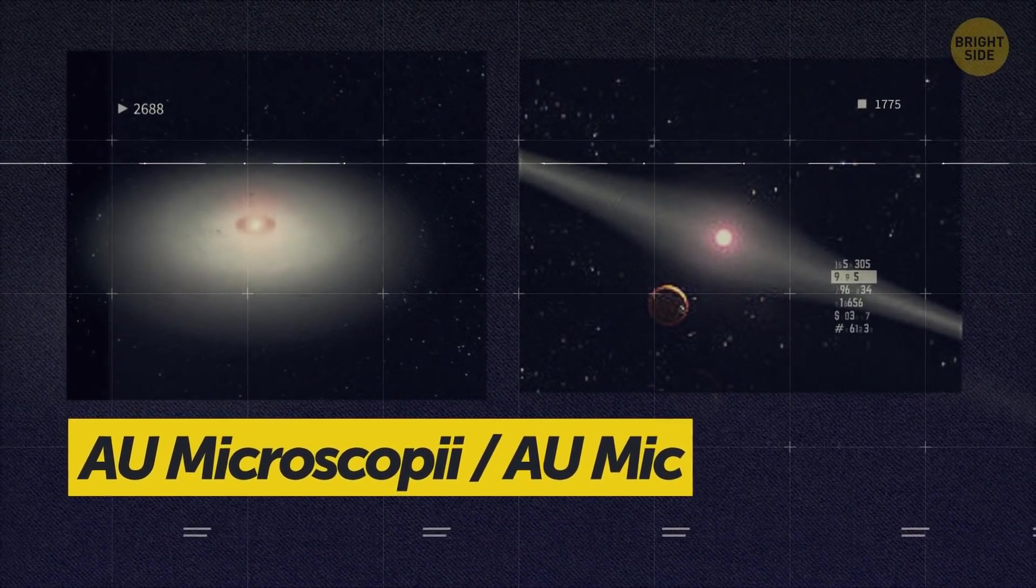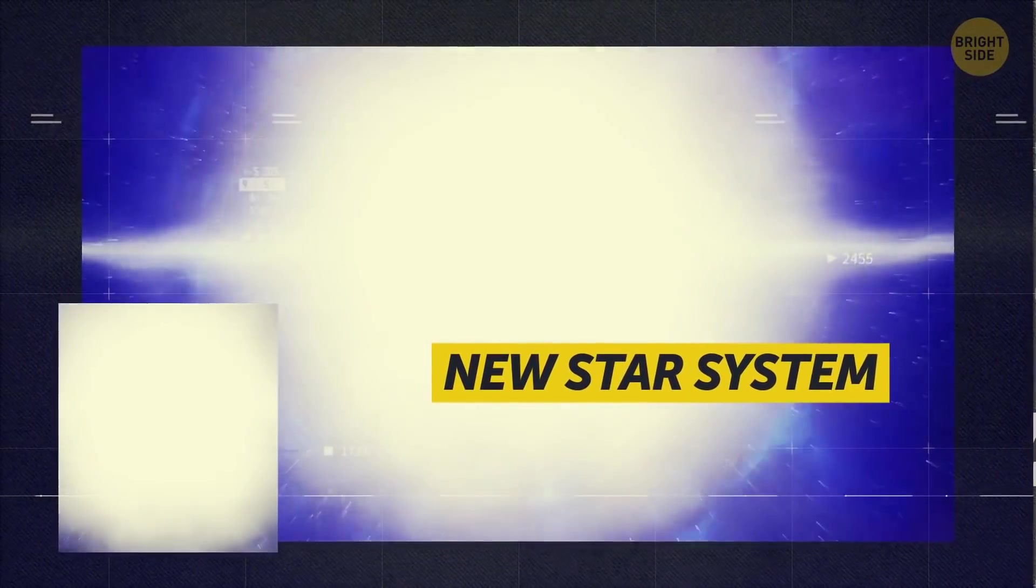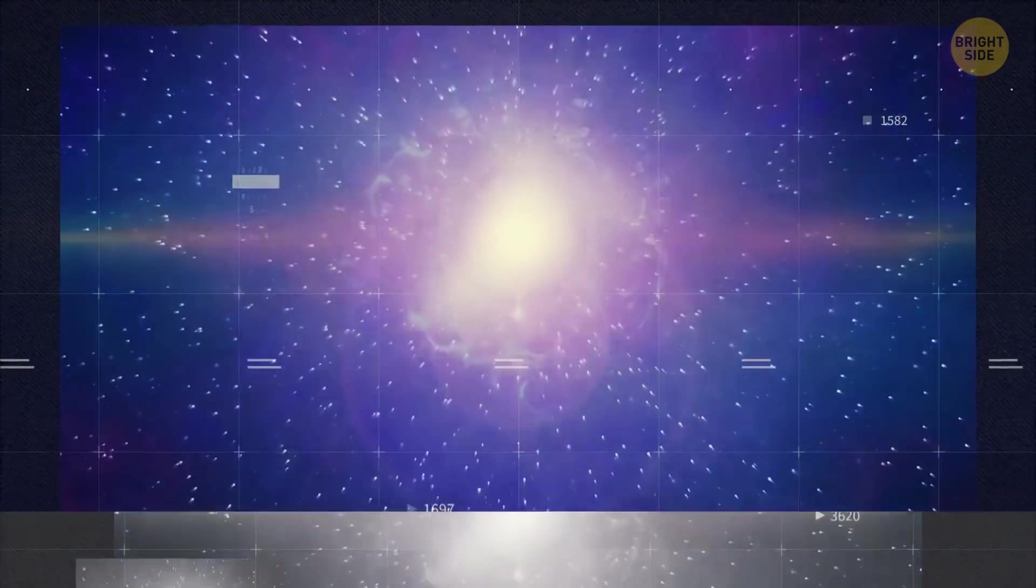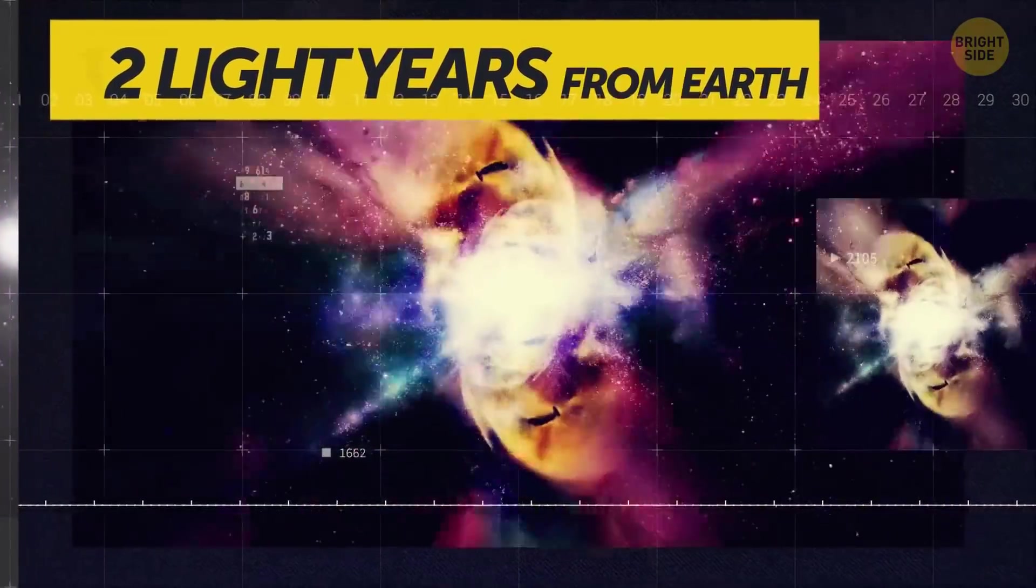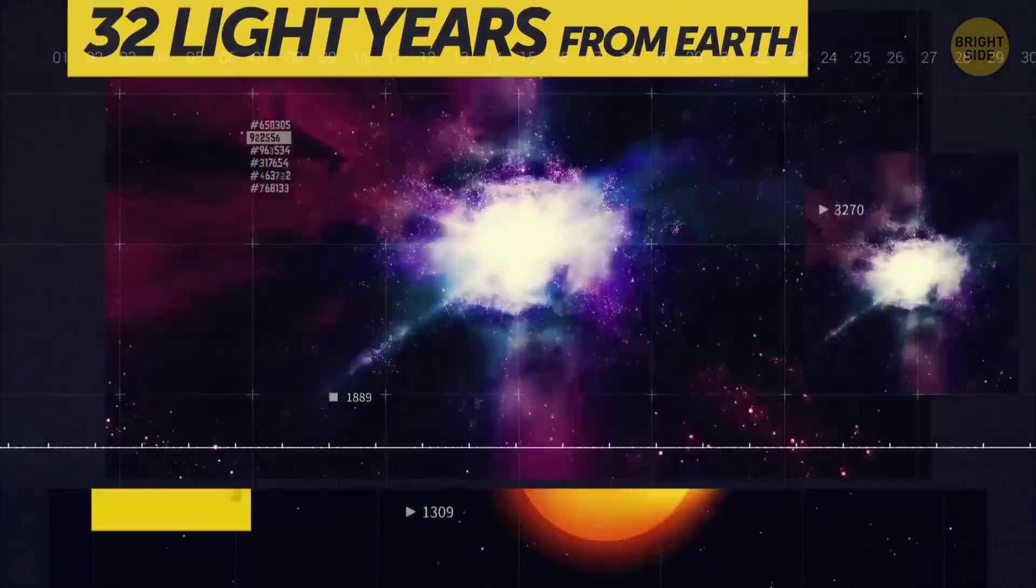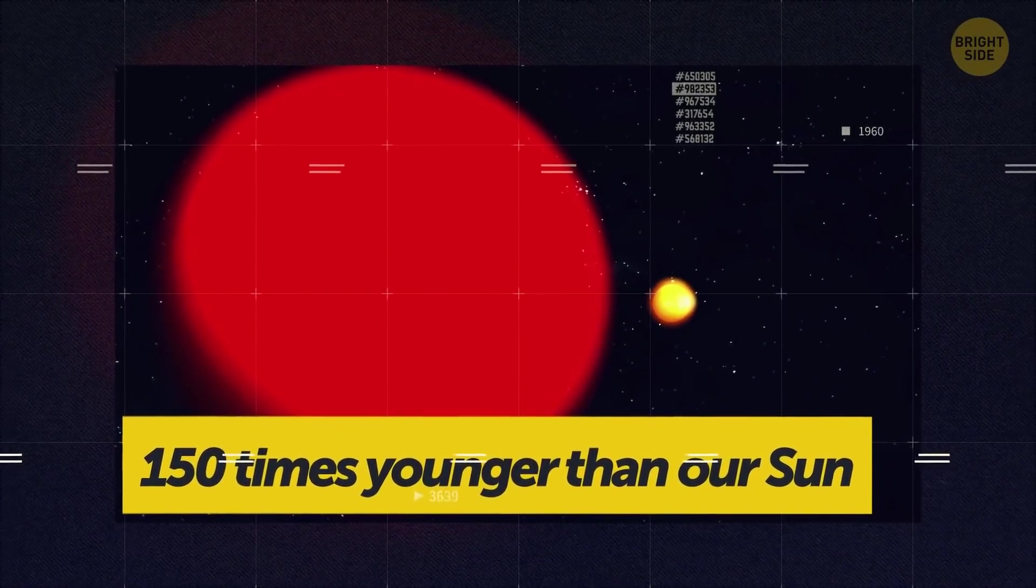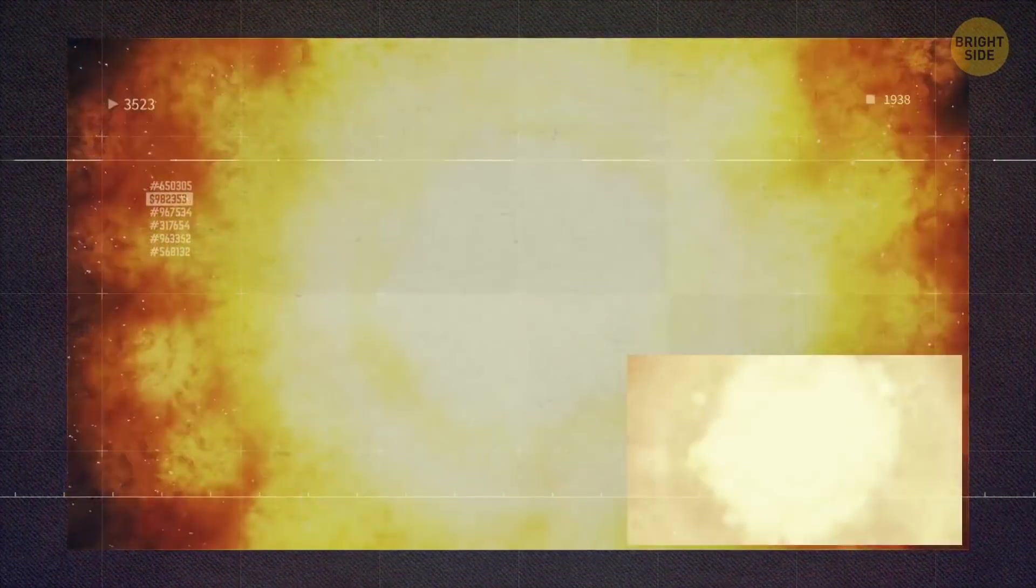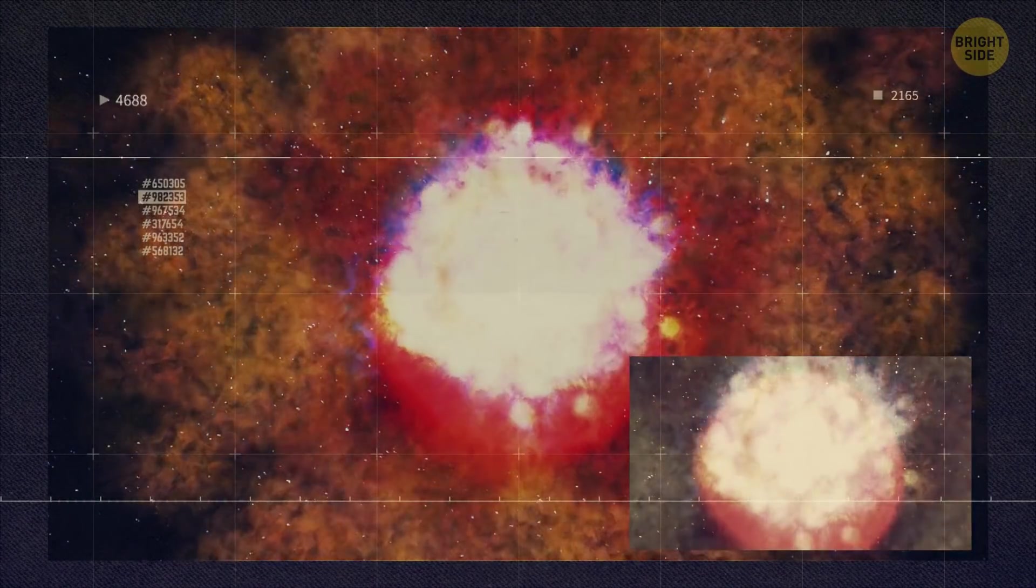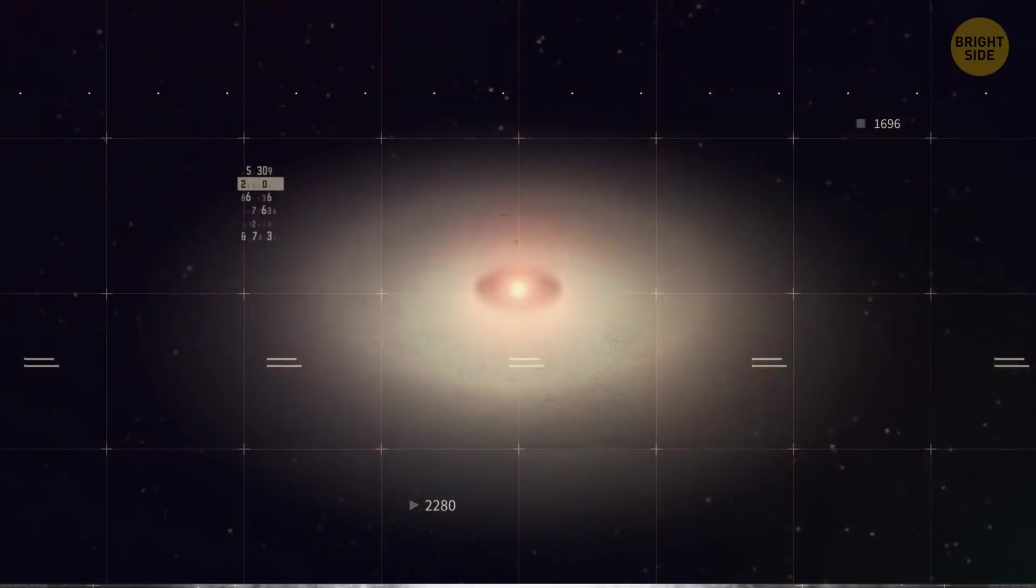AU Microscopii, or AU Mic for short, is basically a cradle of a new star system that can be observed directly. It's really close, only 32 light-years away, and the star is very young, around 150 times younger than our Sun. On a cosmic scale, it's like a newborn baby, and you can still see a cloud of debris swirling around it from the time it was born. But the curiosities don't stop there.